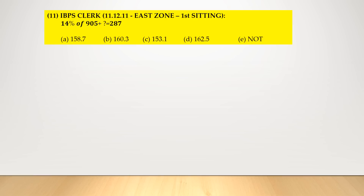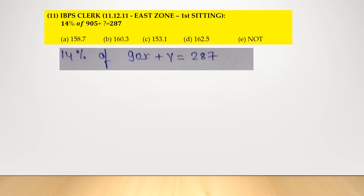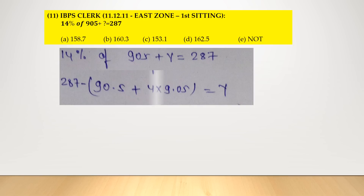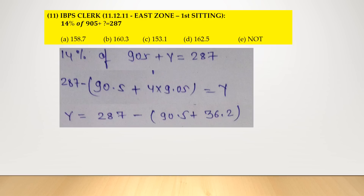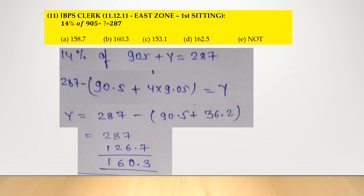Question number 11, asked in IBPS Clerk: 14% of 905 plus y is equal to 287. Taking y to one side, y = 287 minus 14% of 905. 14% can be broken down into 10% plus 4%. So 10% of 905 is 90.5 and 4% is 4 × 9.05 = 36.2. Therefore y = 287 minus 90.5 plus 36.2, which equals 160.3 — option number B.